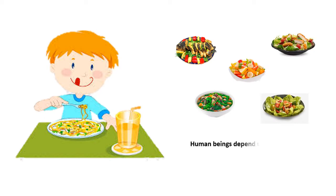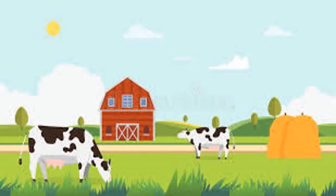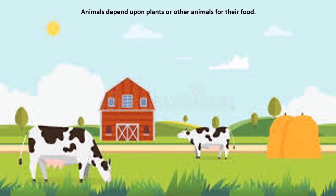Living things need food and water. Human beings depend upon plants and animals for their food. Plants make their own food using water, air, and sunlight. Animals depend upon plants or other animals for their food.